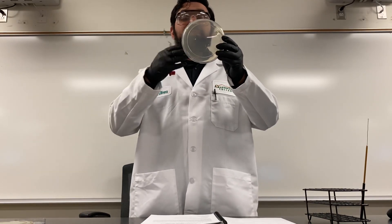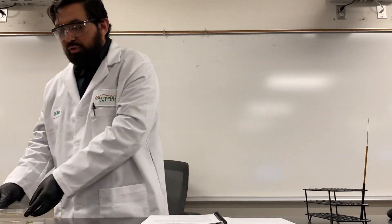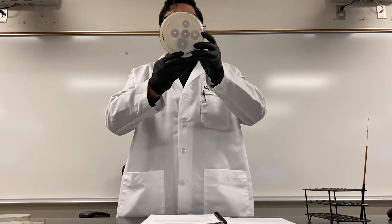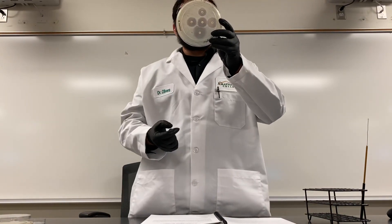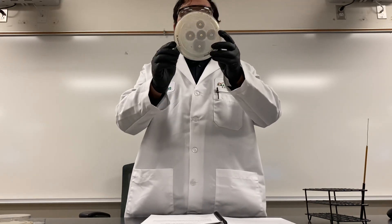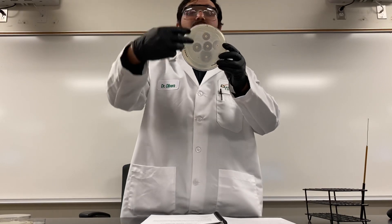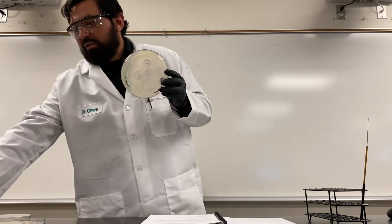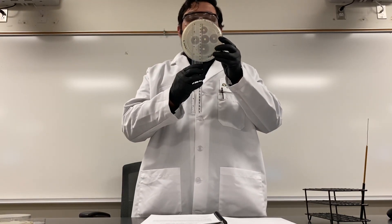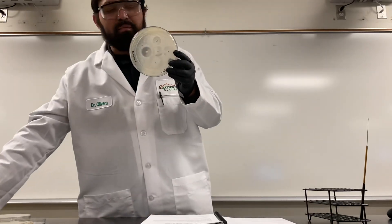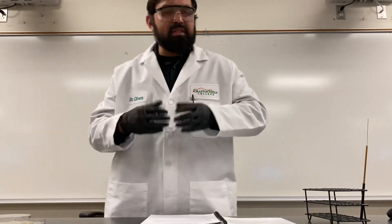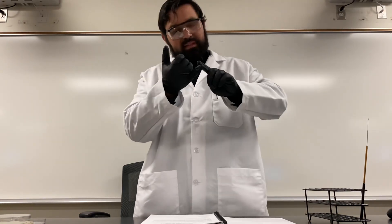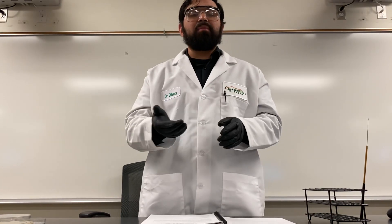We'll have our lawn of organisms again — E. coli, Staph, and Pseudomonas — then place the little discs and see if those particular antibiotics have an effect. Here we have a few different antibiotics, and you can see the larger or slightly smaller zones created. Your job will be to take a ruler and measure the diameter of these zones specifically in millimeters. The larger the diameter, the more of an effect that particular antiseptic, disinfectant, or antibiotic has on that organism.